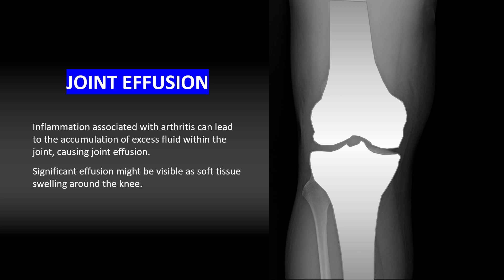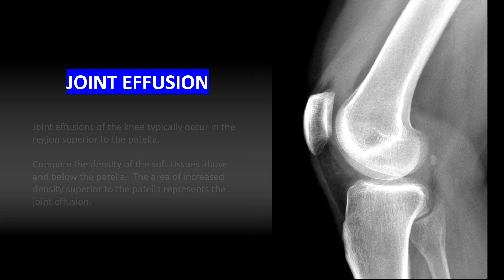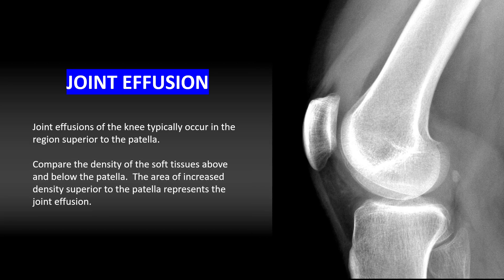A joint effusion may also be present. Inflammation associated with arthritis can lead to the accumulation of excess fluid within the joint. Significant effusion might be visible as soft tissue swelling around the knee. From a radiographic perspective, a joint effusion of the knee is best visualized on the lateral view. Joint effusions typically occur in the region superior to the patella — compare the density of the soft tissues above and below the patella; increased density superior to the patella represents the joint effusion.